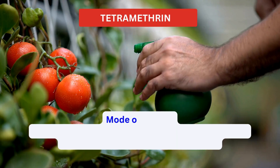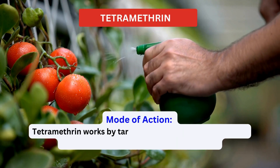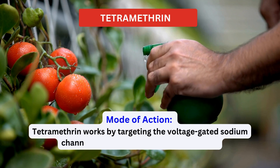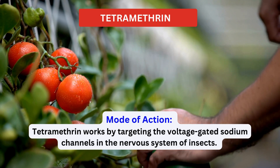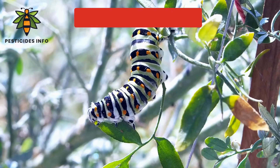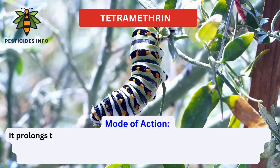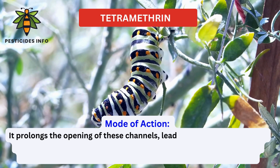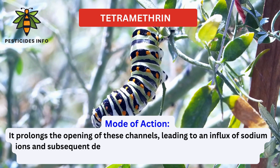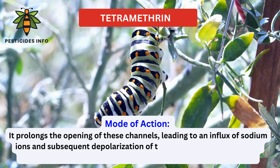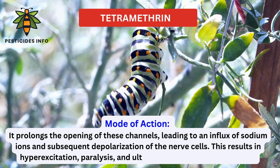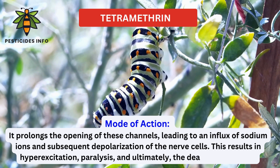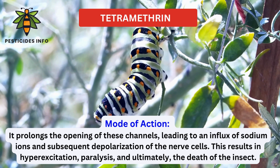Mode of action. Tetramethrin works by targeting the voltage-gated sodium channels in the nervous system of insects. It prolongs the opening of these channels, leading to an influx of sodium ions and subsequent depolarization of the nerve cells. This results in hyperexcitation, paralysis, and ultimately the death of the insect.